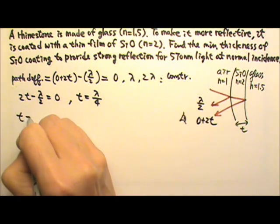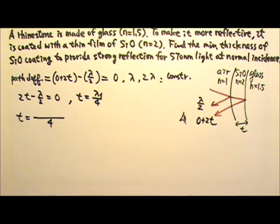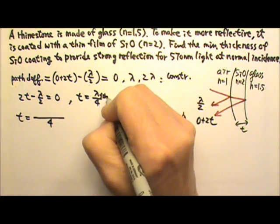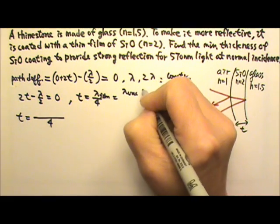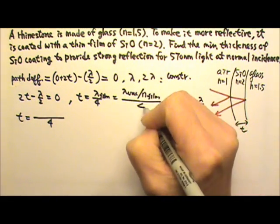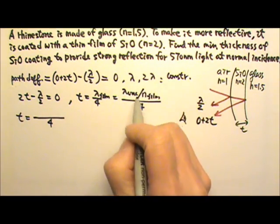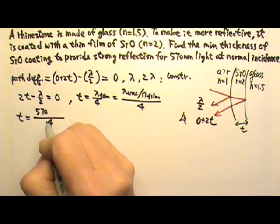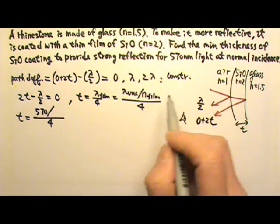And again, this will be the lambda in the thin film, which is the wavelength in the vacuum divided by the n of the thin film. So this will be the lambda in the vacuum is 570 nanometers divided by the n of the thin film.